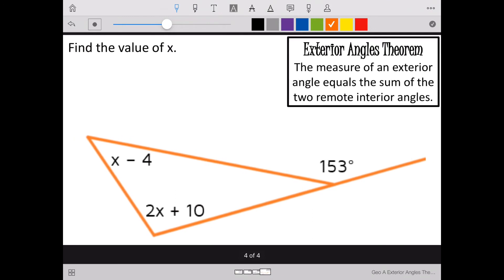One last example for our exterior angles theorem. We're getting really fun with this one. I have an exterior angle, 153 degrees. I have two remote interior angles, x minus 4 and 2x plus 10. We want to find the value of x. Our exterior angle has to equal the two remote interior angles added together.